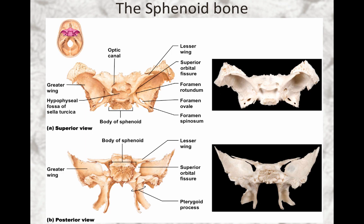The sphenoid bone is often referred to as a bat-shaped bone, and it does somewhat resemble a bat. It's also referred to as the keystone of the cranium because it articulates with all the other bones of the cranium. Its location in the cranium is highlighted in pink in the image in the upper left.